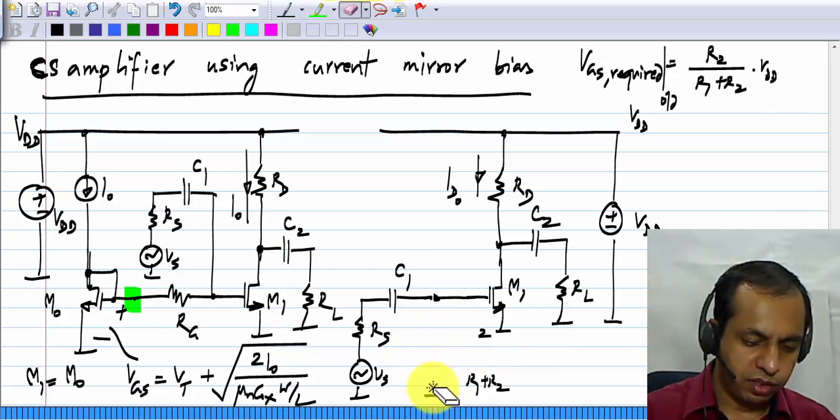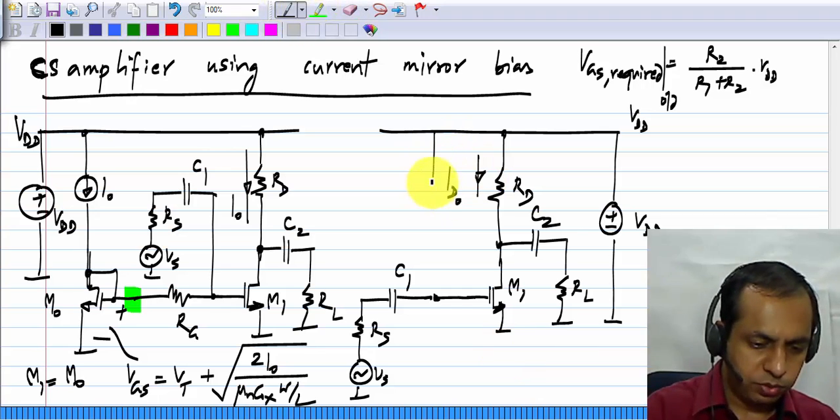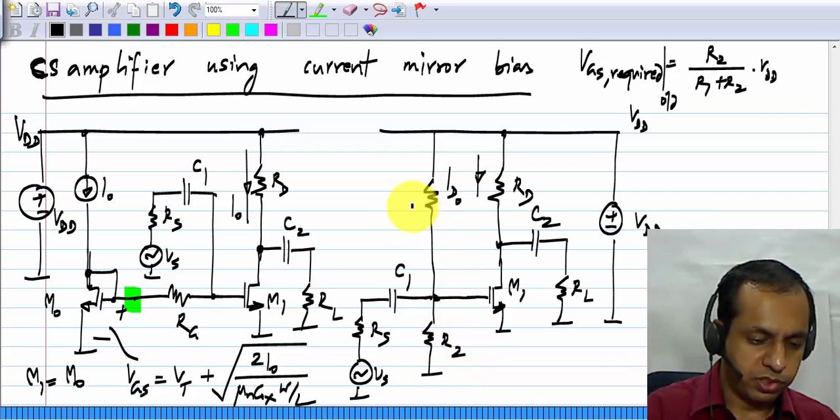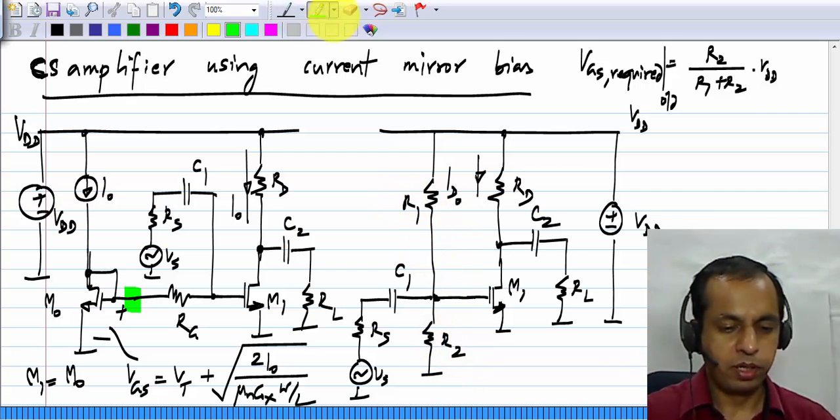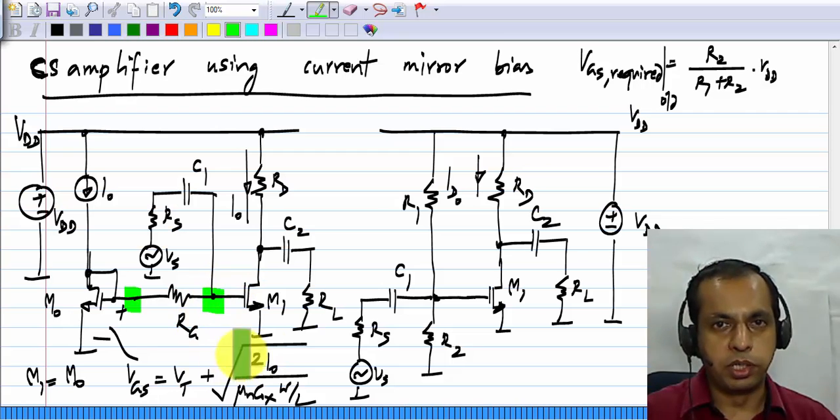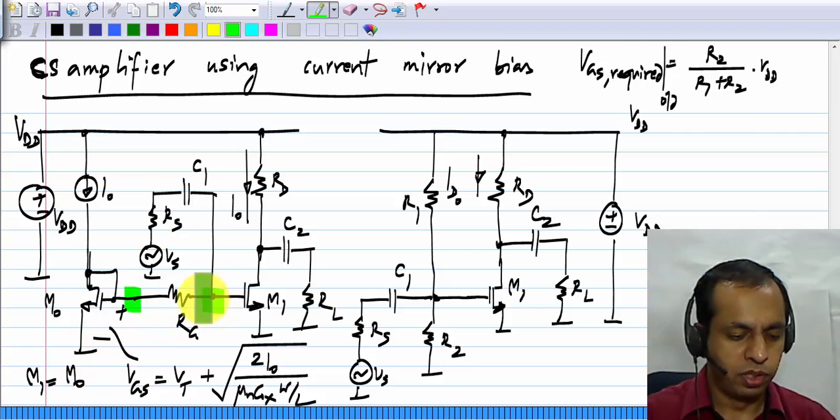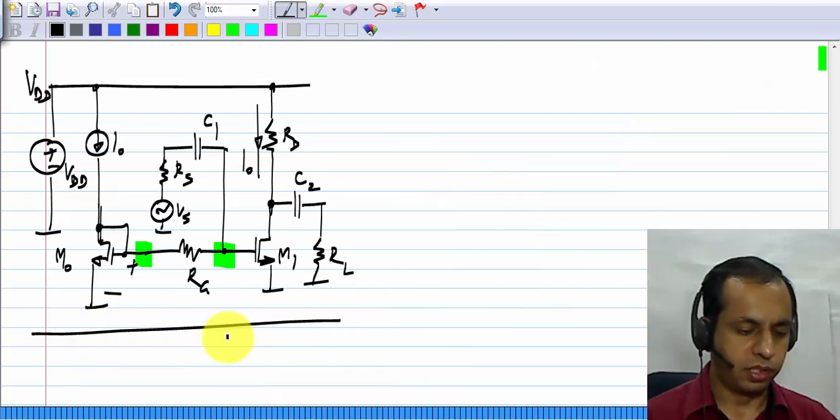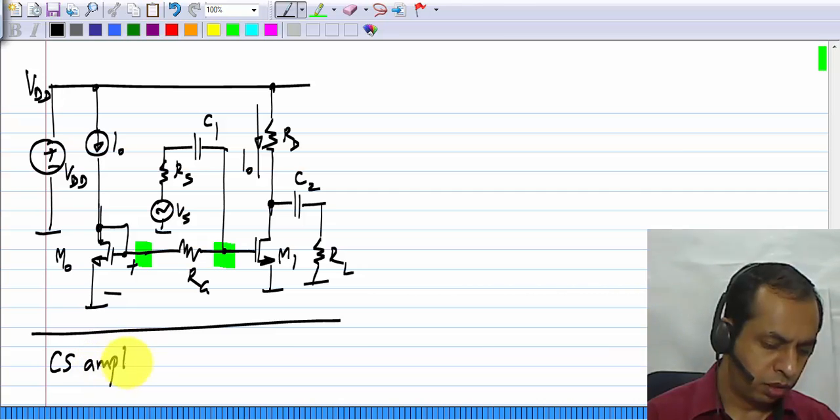The original common source amplifier, the gate bias was derived using a voltage divider. I had shown some representation of that. You can see the similarities between these two. The only difference is that this voltage is not constant with respect to transistor parameters. If the threshold voltage increases or the current factor drops, this bias voltage itself increases to compensate for it to some extent. This circuit is the common source amplifier using current mirror bias.